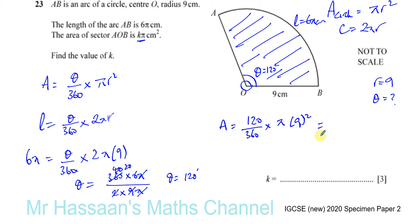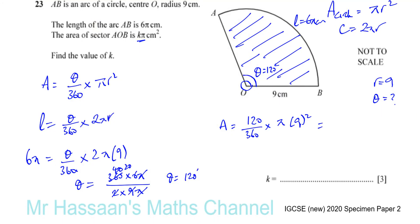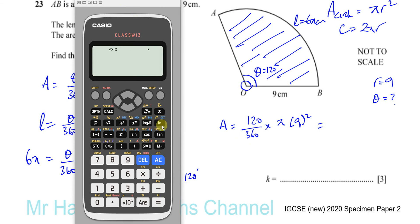In terms of π, the answer is going to be 120 over 360 times 81π. Let me calculate that.